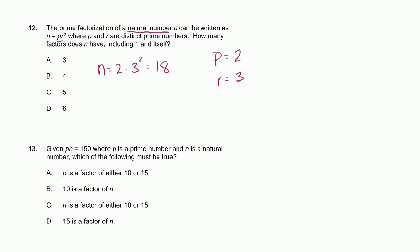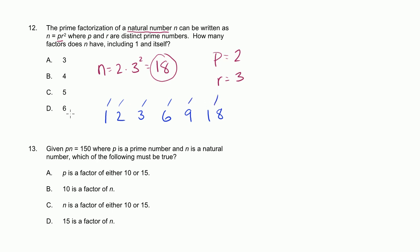I could've picked 5 and 7, or 3 and 2, but all of them should have the same answer — that's what this question is implying. So n equals 18 is a possible n. How many factors does it have? Let's factor it out: 1 and 18, 2 and 9, 3 and 6. So it's got 1, 2, 3, 4, 5, 6 factors. So the answer is D.